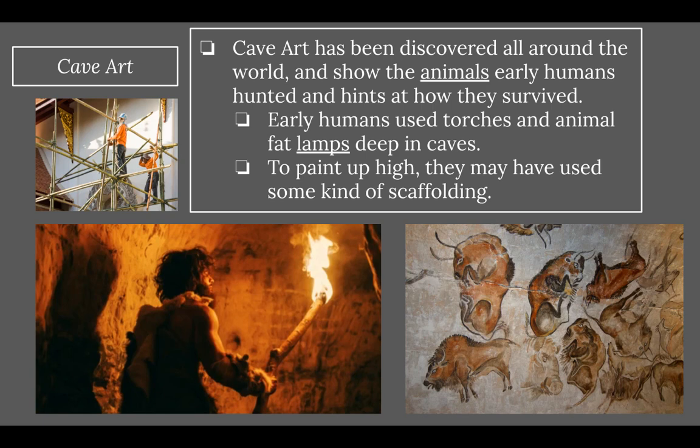Cave art has been discovered all around the world and shows the animals early humans hunted, offering hints at how they survived. Early humans used torches and animal fat lamps deep in caves. Some of this cave art was discovered deep in caves, so to see what they were doing, they would have needed light — that's where torches and animal fat lamps came in.